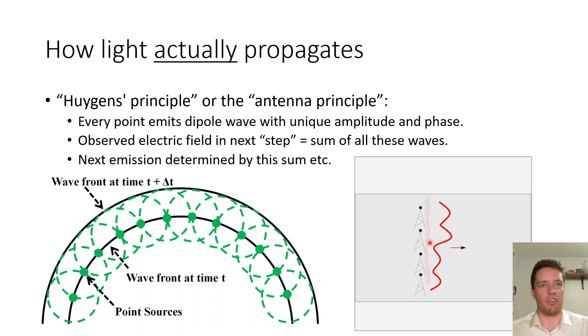In the case of the fiber for example we can imagine a cross section here where the entire cross section consists of a very large number of infinitesimally small antennas. It gets excited by some input field with a certain phase and amplitude distribution and the next field in the next step is going to be determined by these excitations and so on and so forth.